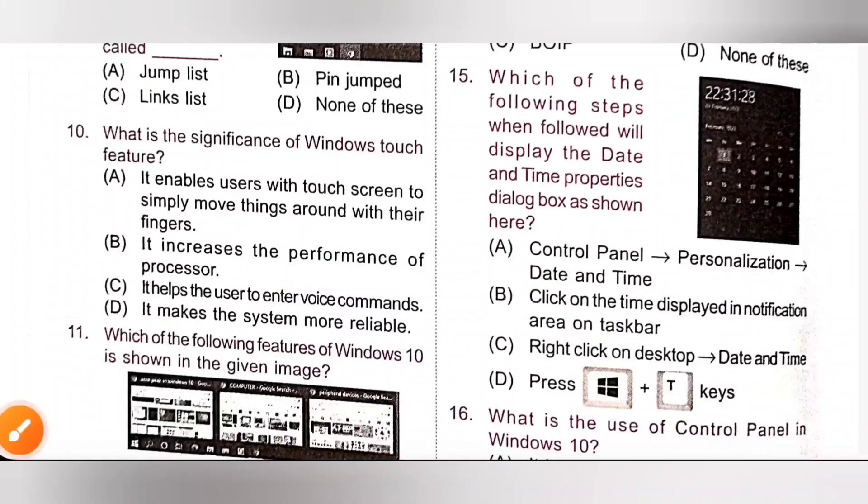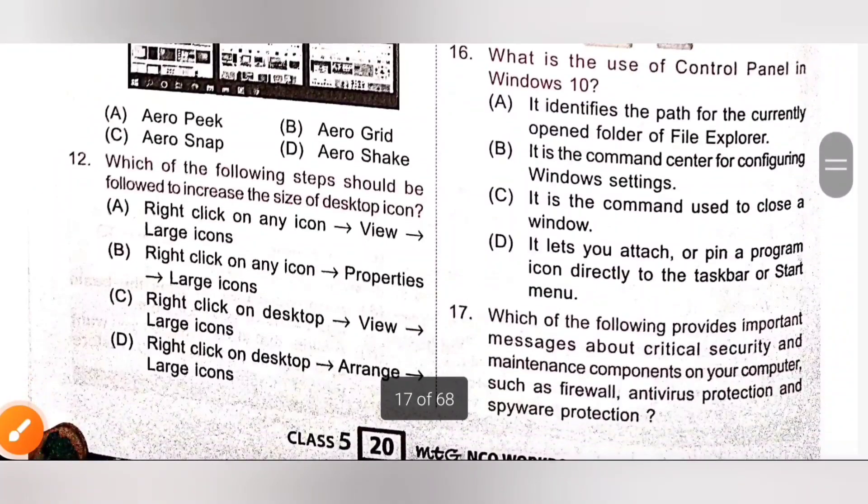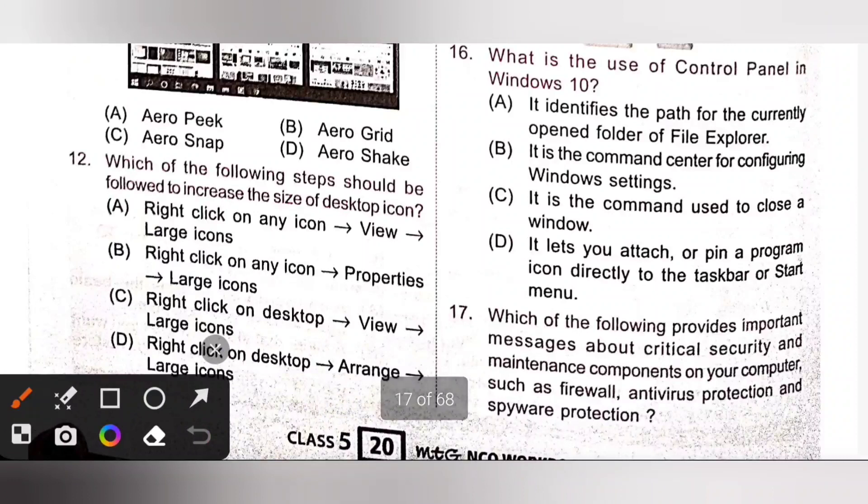Next is 16th one. What is the use of control panel in Windows 10? Option A, it identifies the path for the currently opened folder of file explorer, no. Option B, it is the command center for configuring Windows settings, yes.